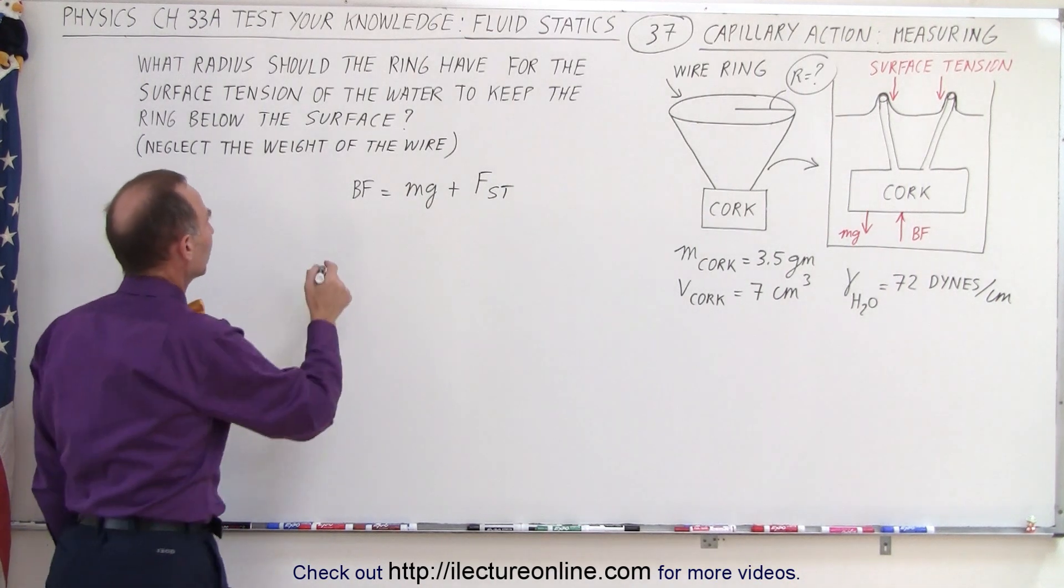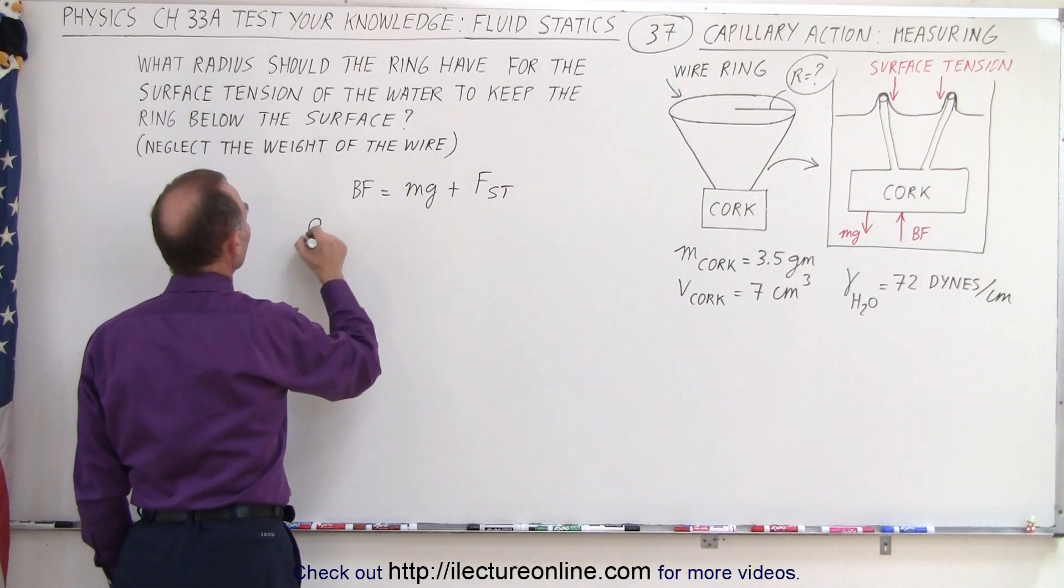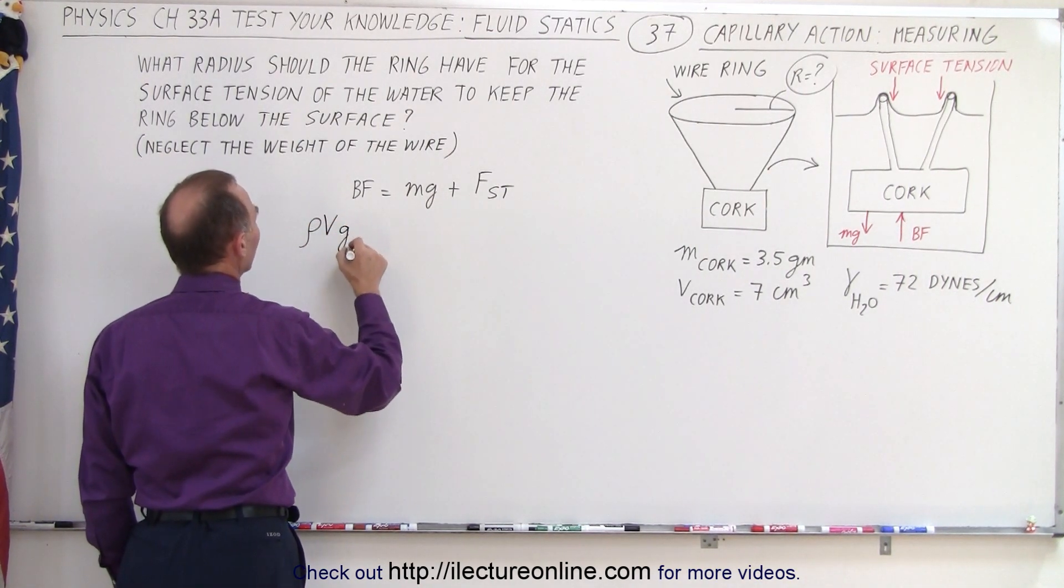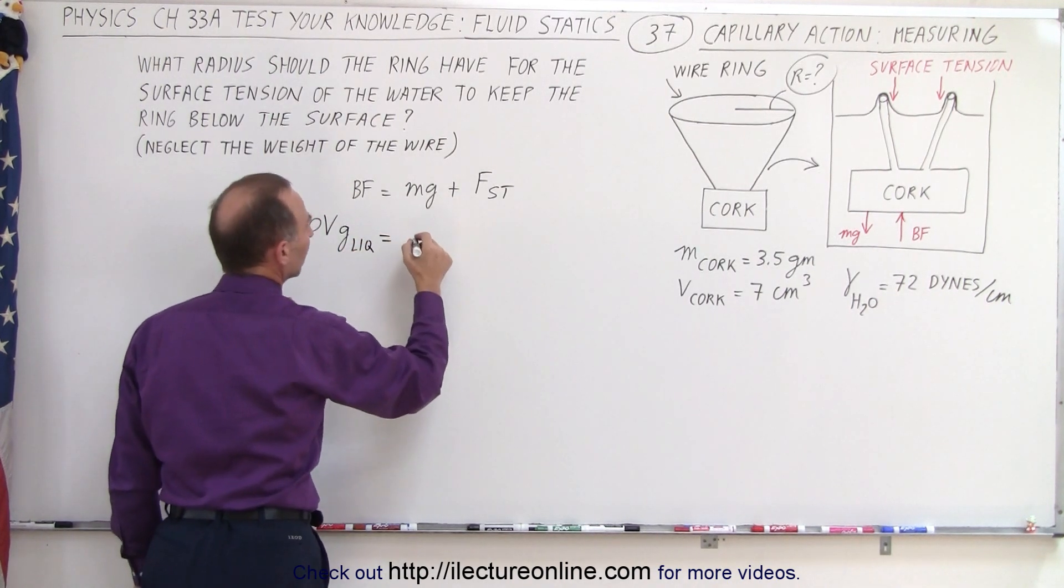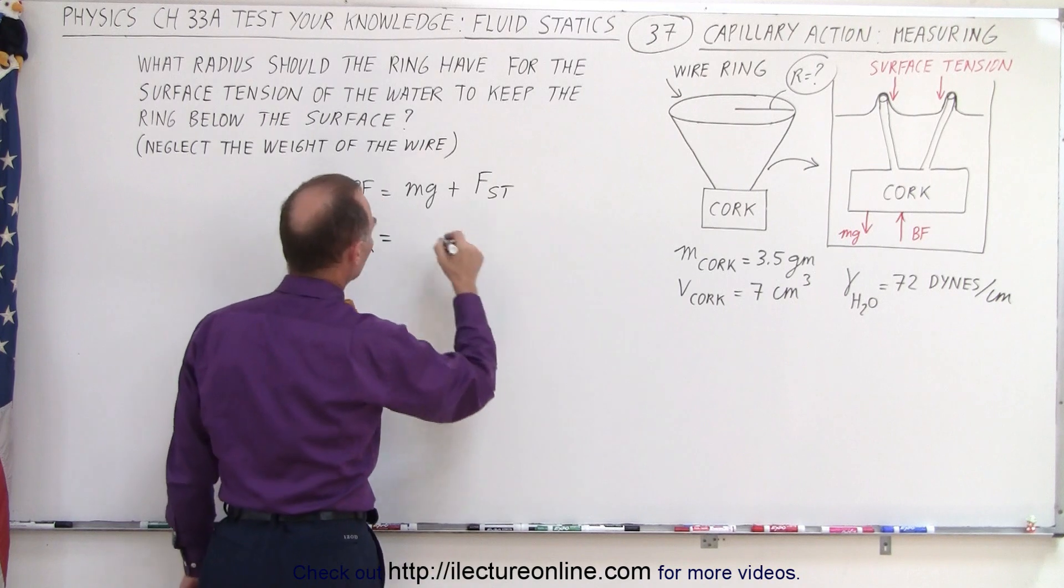The buoyancy force is going to be equal to the density times the volume times g of the displaced liquid, equals the weight of the cork. Well, we're given the mass so we can figure out the weight, mg.